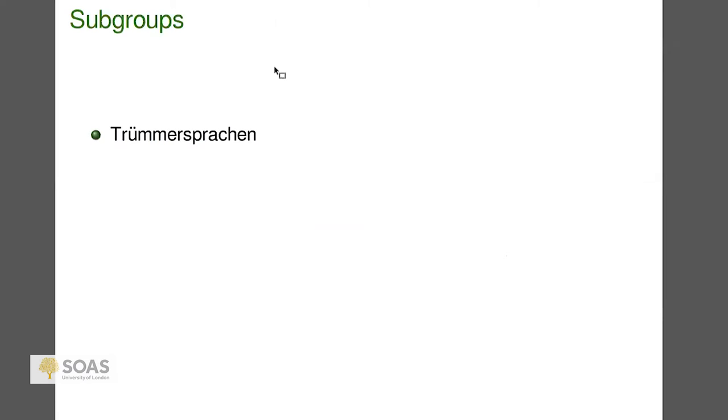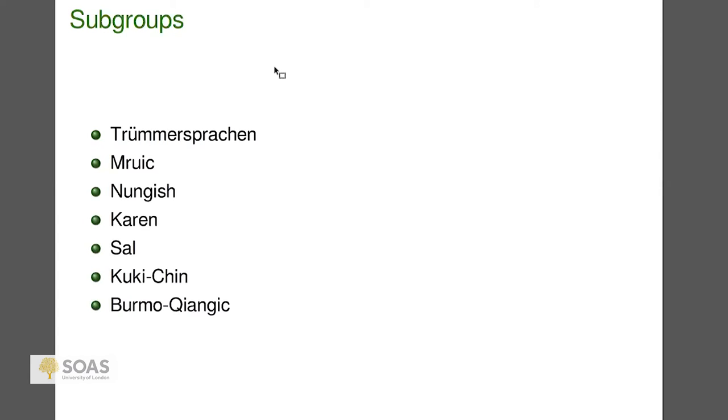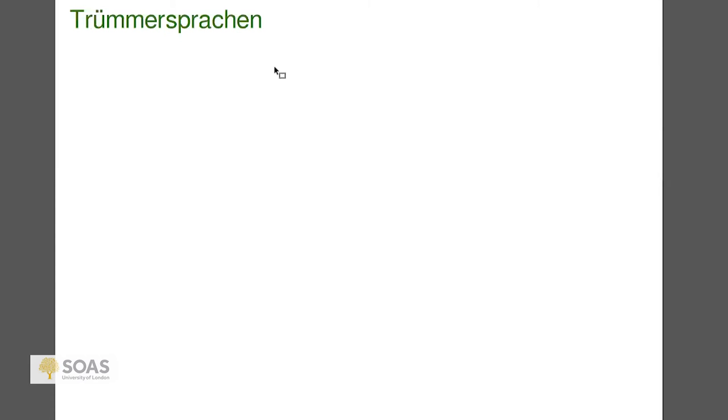Now I'll go through Sino-Tibetan subgroups — not all of them; there are about 30. I won't cover Sinitic or Tibetan. My focus is on Southwestern China. I'll go from the more isolated, smaller groups to the larger ones. First we'll start with Trümmersprachen — languages of fragmentary attestation — then Mruic, Nungish, Karen, Sal, Kuki-Chin, and Burmo-Changik.